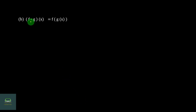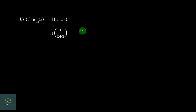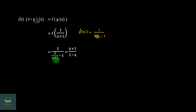F∘G of x is the composition. F∘G of x uses the formula 1 by x plus 1. F of 1 by x plus 1: the formula puts in 1 by x plus 1, giving 1 over 2 times 1 by x plus 1, minus 1. Simplifying: 2 by x plus 1 minus 1.